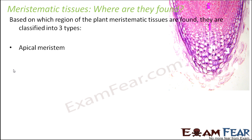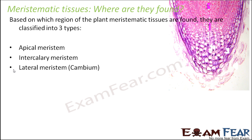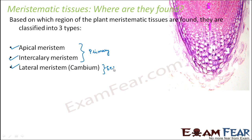The three types are: apical meristem, intercalary meristem, and lateral meristem or cambium. These are the three types of meristematic tissues based on their location. Apical meristem and intercalary meristem are called primary meristem, whereas lateral meristem is known as secondary meristem.